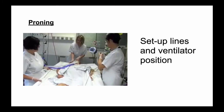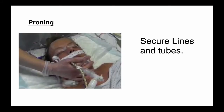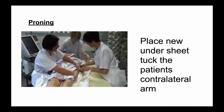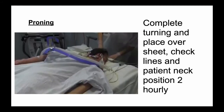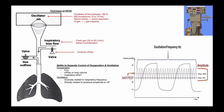Some COVID patients do progress to superimposed pneumonia and subsequent ARDS. When doing proning: first, set up the lines and ventilator position; then secure the lines and tubes; move the patient to the side; have your undersheet set up; flip the patient back over; push the undersheet the other way; connect cardiac monitors to the back; and begin proning. Change position every two hours to avoid bedsore formation.